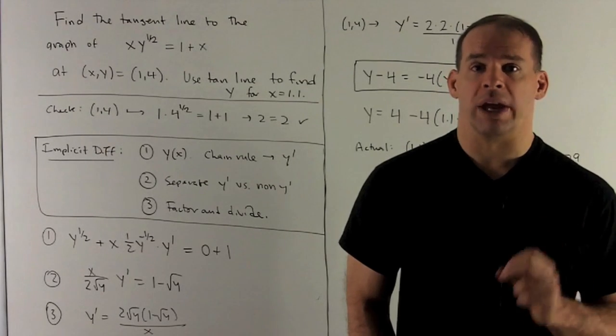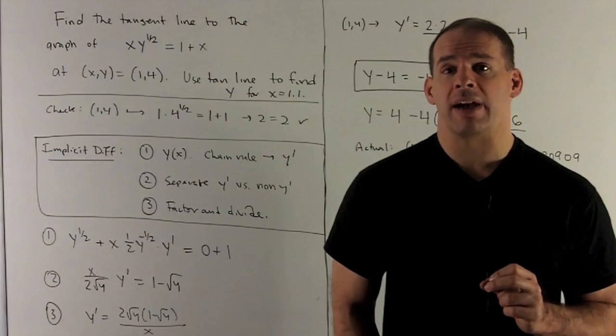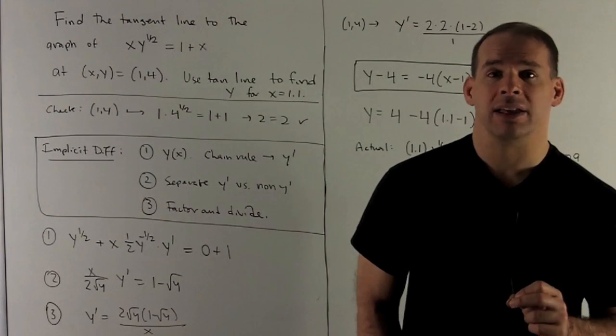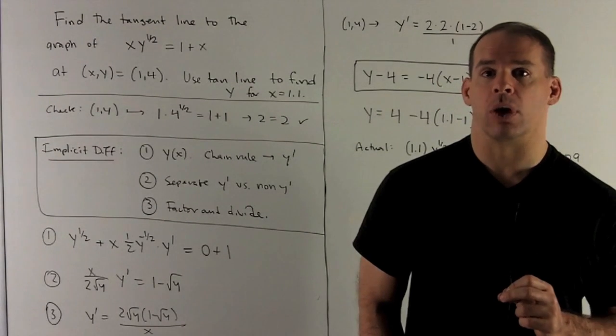Find the tangent line for the equation xy^(1/2) = 1+x at the point (x,y) = (1,4).